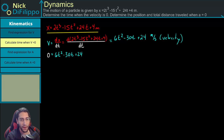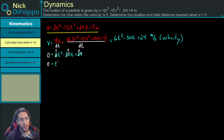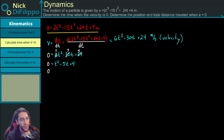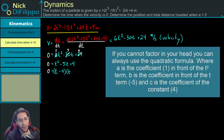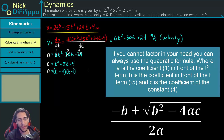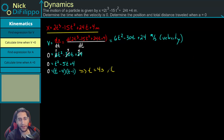Simplifying, all terms are divisible by 6, giving us 0 = t² - 5t + 4. Factoring this, we get (t - 4)(t - 1) = 0. This tells us that velocity equals zero at two times: t = 1 second and t = 4 seconds.